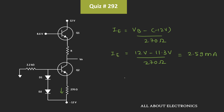Since we have been given that the value of β is very high, we can say that the collector current is approximately equal to the emitter current. That means collector current Ic is also equal to 2.59mA. As you can see, the same current will also flow through resistor R, so the current through R is also equal to 2.59mA.